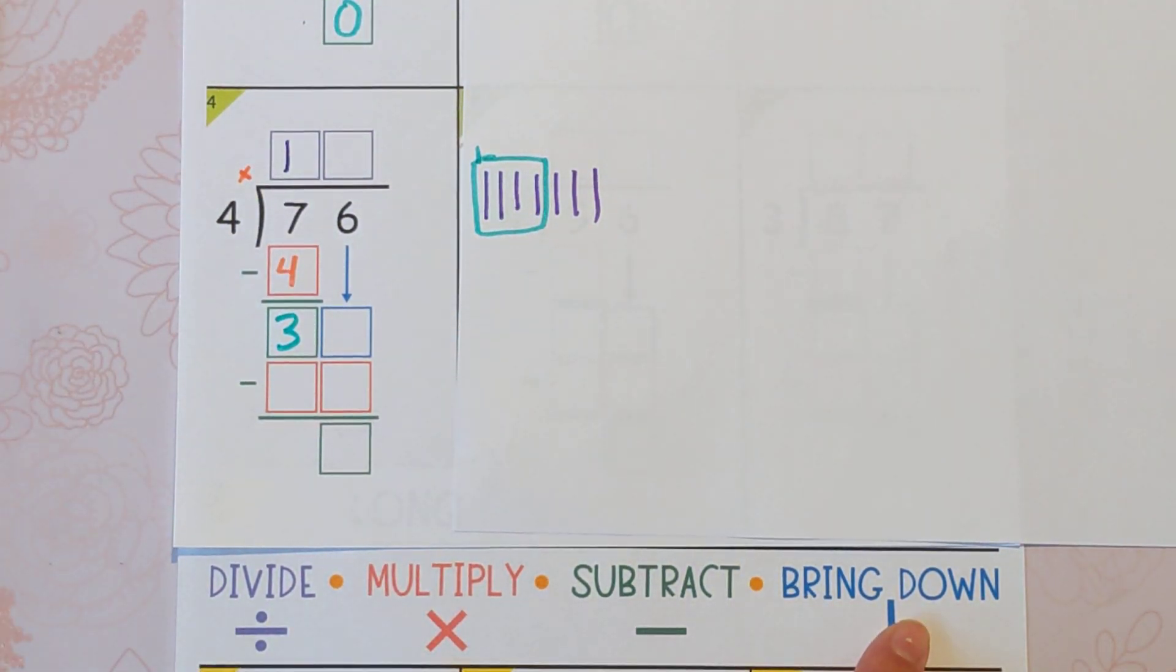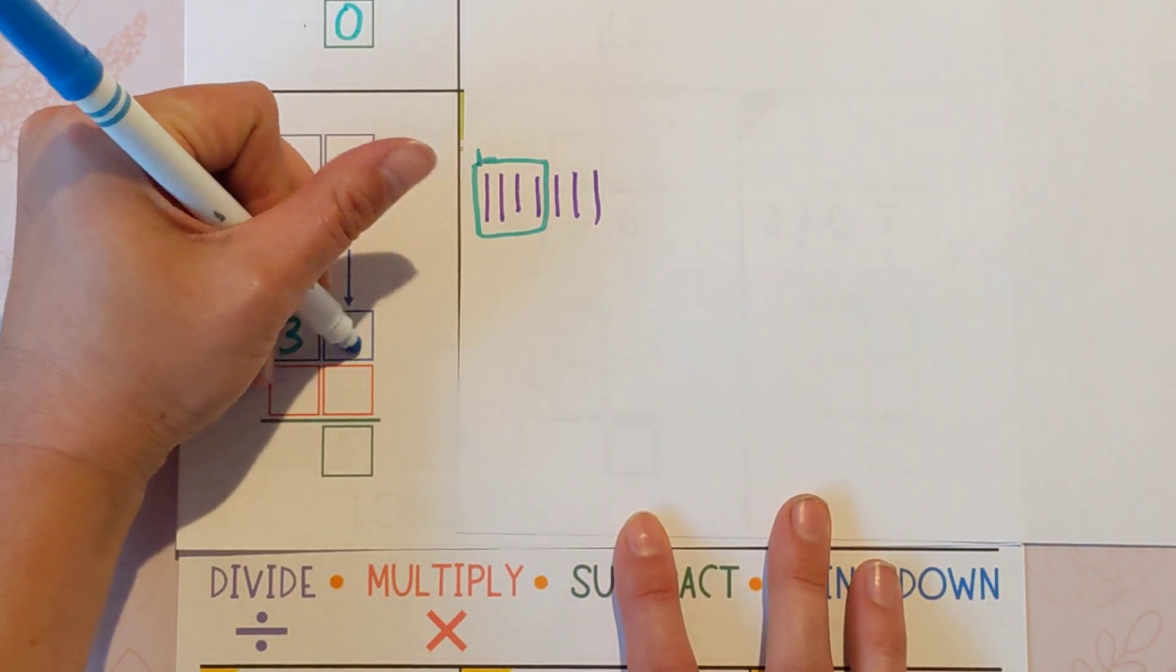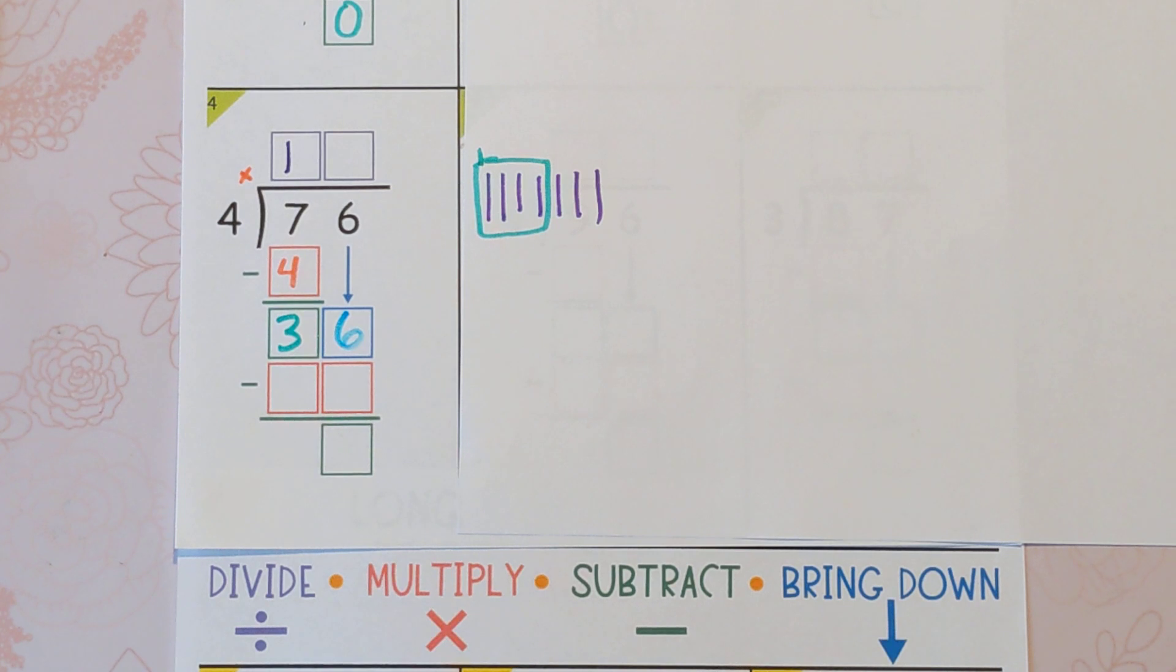The next step is to bring down, and we have this other digit waiting for us. So we're going to bring down the six. And now we're ready to start again. So we divide again. But this time, what are we dividing?